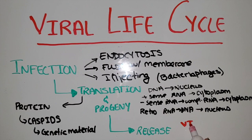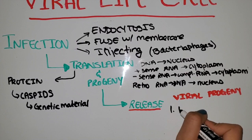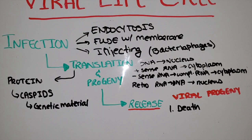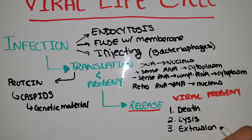When a host cell has too many viral progeny, they are released through a couple of processes. One is cell death — the cell bursts and spills out all the viral progeny. Second is lysis — as the number of viral progeny keeps increasing, the cell swells and eventually ruptures. The third is extrusion, which is similar to fusing, where the virus fuses with the plasma membrane and leaves the host cell.